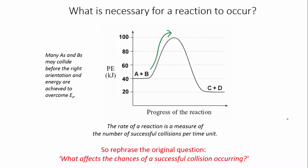And it turns out that the variables that affect the chances of a successful collision occurring are surface area, concentration, pressure, temperature, and the presence of a catalyst. And in the next video, we'll see how they do that.